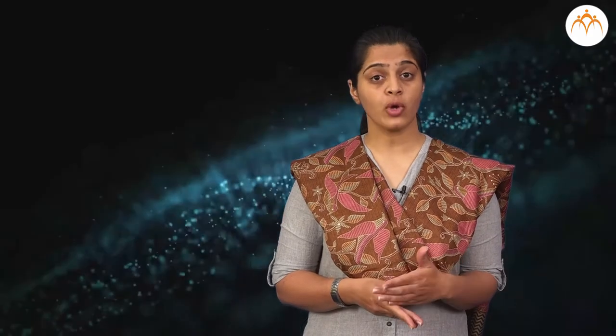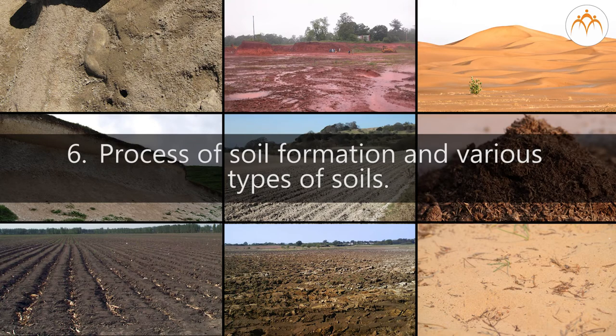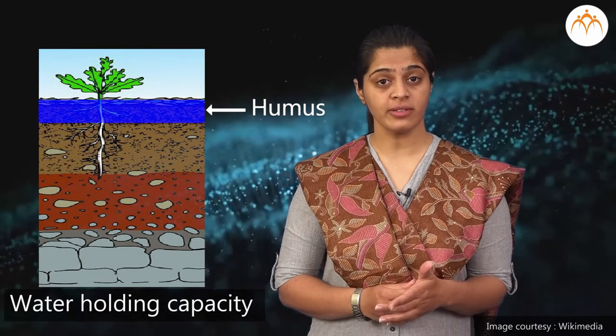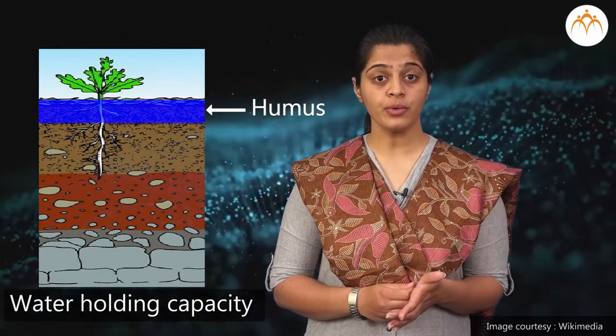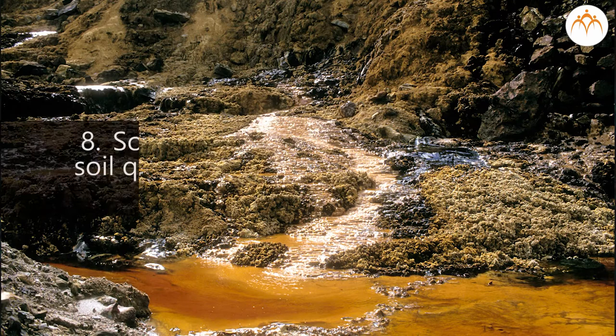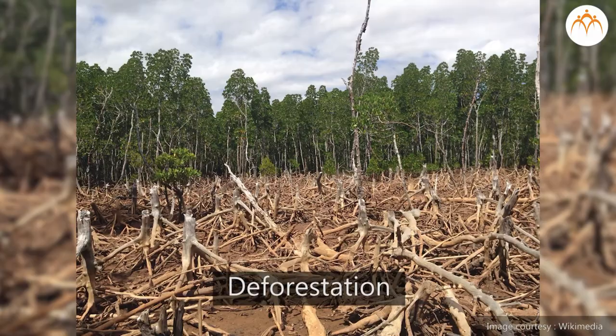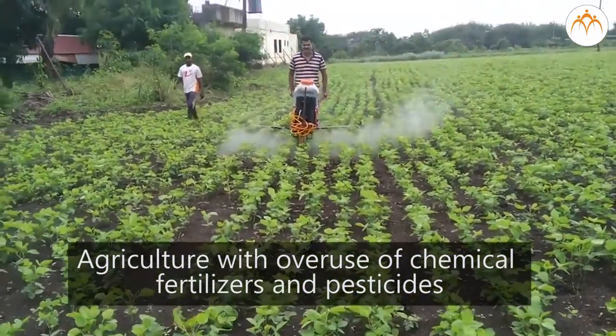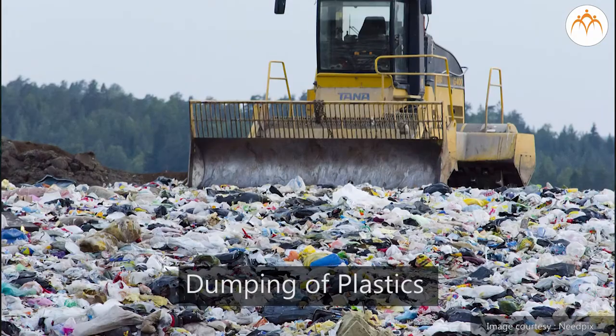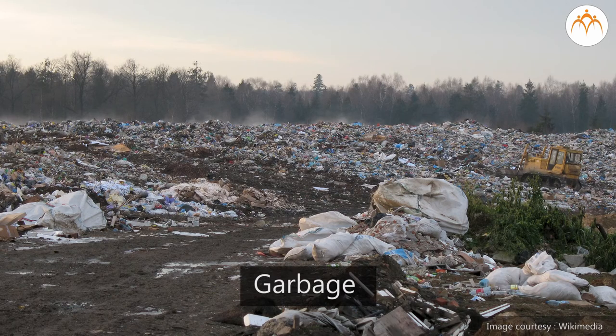6. The process of soil formation involves gradual breakdown of bedrock over thousands of years due to various physical and chemical forces. 7. Decomposition of dead animals and plant matter by organisms leads to the formation of humus, which adds to the topsoil and improves its fertility and water holding capacity. 8. Soil pollution leads to depletion of soil quality and degradation of land as a natural resource. 9. Soil erosion, deforestation, excessive construction, agriculture with overuse of chemical fertilizers and pesticides, aggressive mining, and dumping of plastics and garbage are some causes of soil pollution.